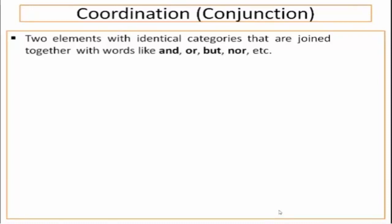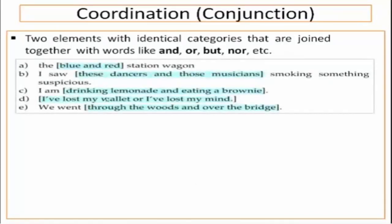Two elements with identical categories joined together with words like 'and', 'or', 'but', etc. Here are some examples: 'The blue and red station wagon' — conjunction between adjective phrases. 'These dancers and those musicians' — coordination between two noun phrases. Here we have coordination between two verb phrases, and in another example, coordination between two sentences. And 'We went through the woods and over the bridge' — coordination between two prepositional phrases.